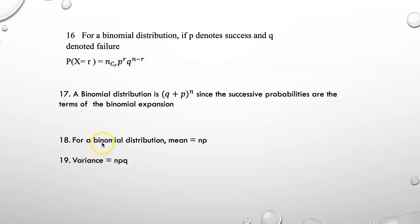For a binomial distribution, mean is nP so it is easy to remember. Mean is nP and variance is nPQ.